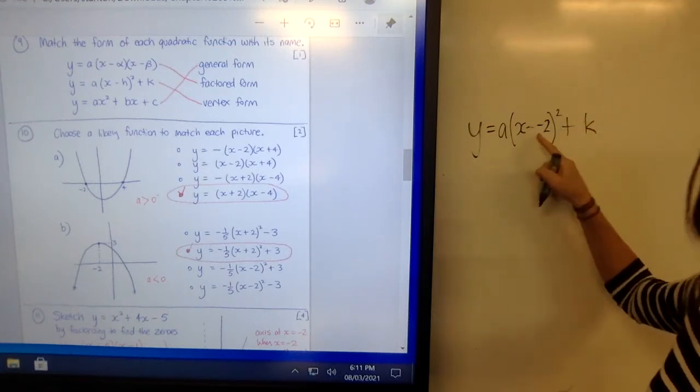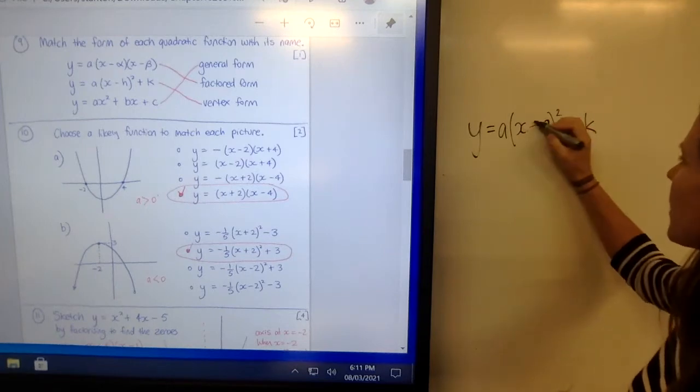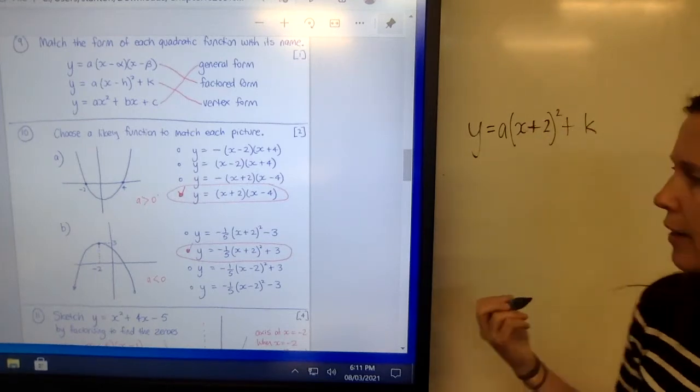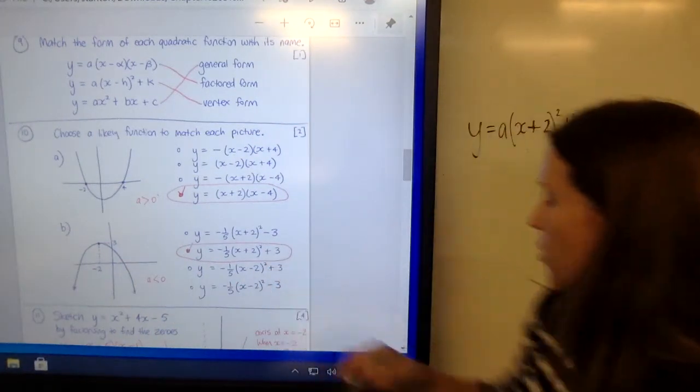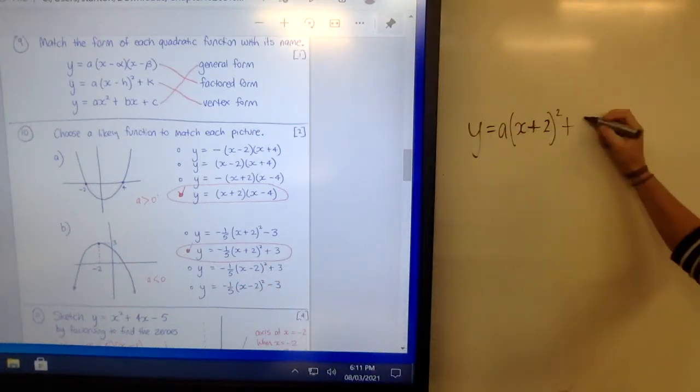Now you see you've got x minus minus 2. Well that's the same as x plus 2. So tidying that up, we can put plus 2. And then the k, that's just the 3 that's tacked onto the end, that's the y value.